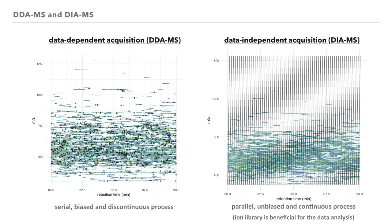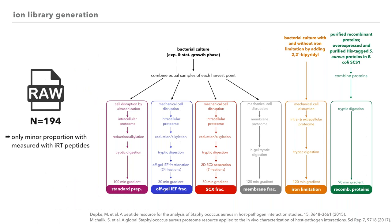For the results presented today, we used a Q-Exactive mass spectrometer with 19 dynamic mass windows for the DIA-MS measurement. An ion library is beneficial for DIA-MS data analysis. We built our comprehensive ion library with different samples using various fractionation methods. We used bacteria grown in complex media and took samples in the exponential and stationary growth phase. Samples were fractionated using off-gel isoelectric focusing, SCX, or membrane enrichment strategies. We also used samples from an iron limitation experiment. In total, roughly 200 measurements were performed.